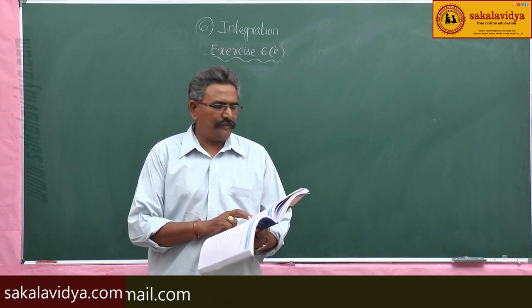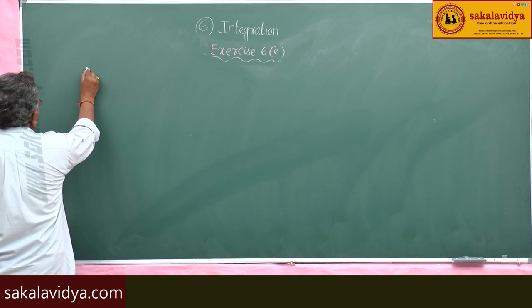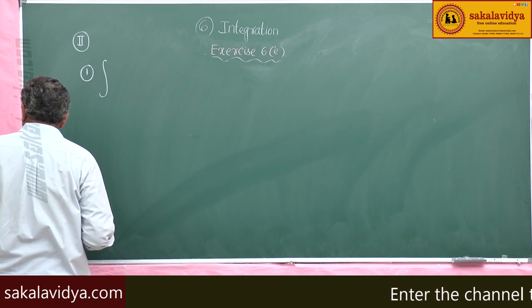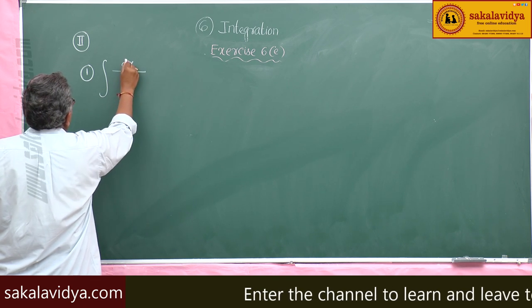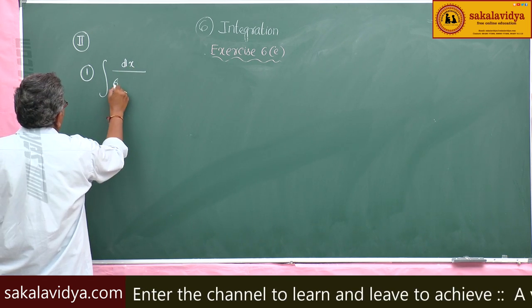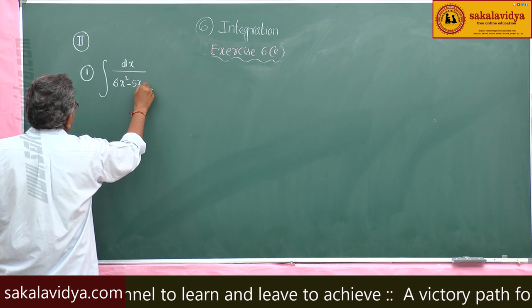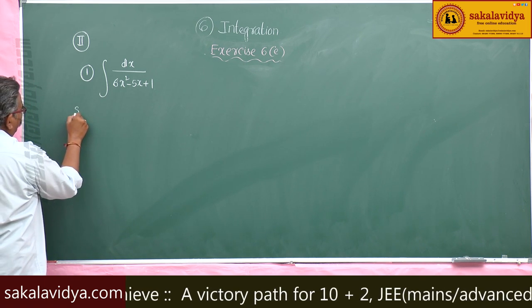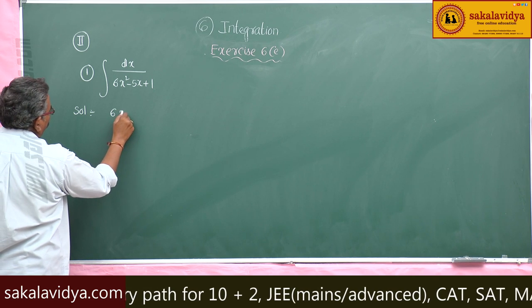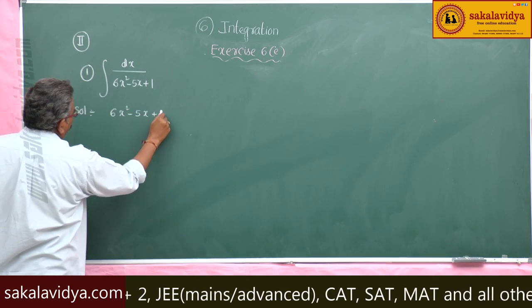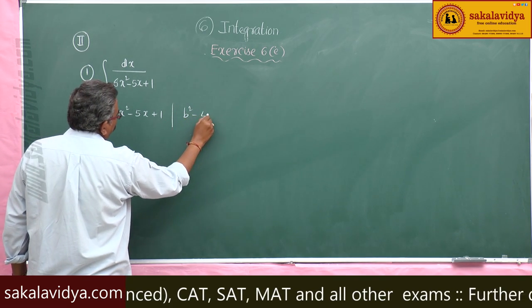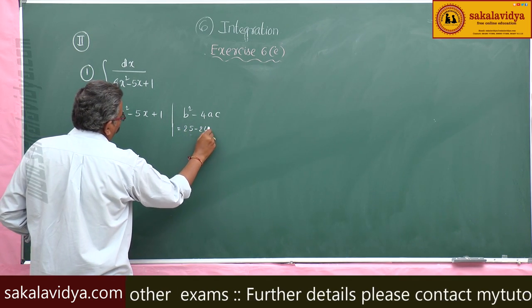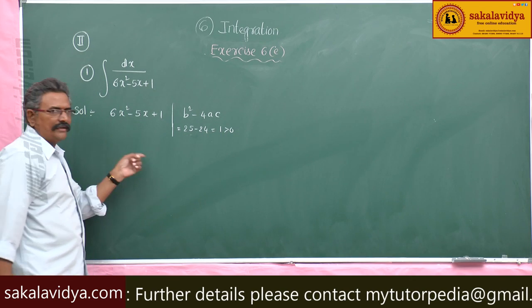Second section, first problem: evaluate the integral of 6dx/(6x² - 5x + 1). In this problem, check b² - 4ac for 6x² - 5x + 1: that is 25 - 24 = 1, which is greater than 0. So we can find out the factors.